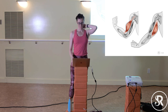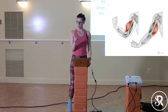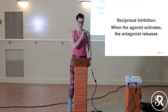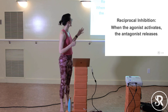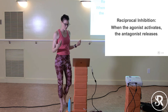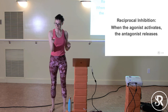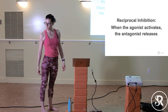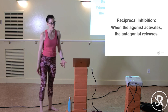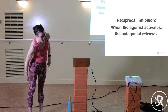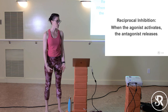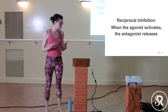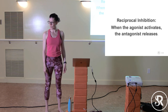Reciprocal inhibition means that when one muscle contracts, the other has to let go. In yoga, this applies practically: if you're doing a forward fold and want your hamstrings to be more open, contracting the quads sends a signal for the hamstrings to release. That's why in yoga we often cue 'engage your legs' in a forward fold — engaging your quads helps open the backs of your legs.